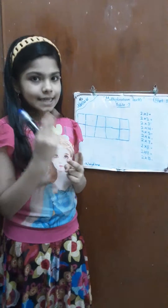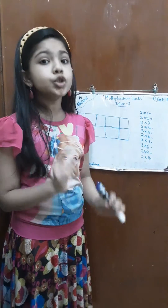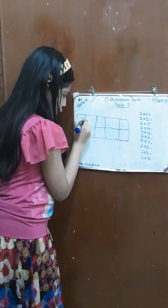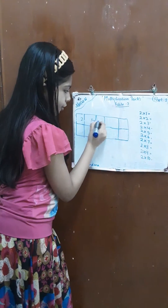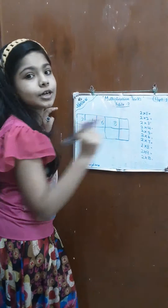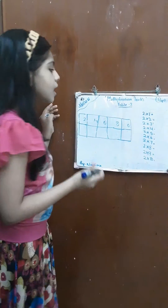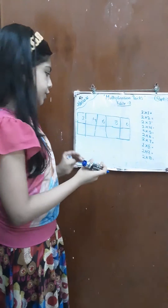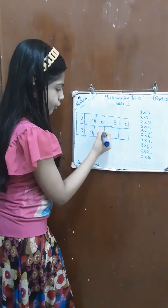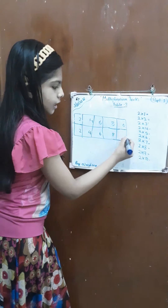Now the second step is to write even numbers from 2 to 8. Let's write on the first row: 2, 4, 6, 8. Here we should write 0, not 10. So the first row is 2, 4, 6, 8, 0. Same thing we repeat on the bottom row also: 2, 4, 6, 8, 0.